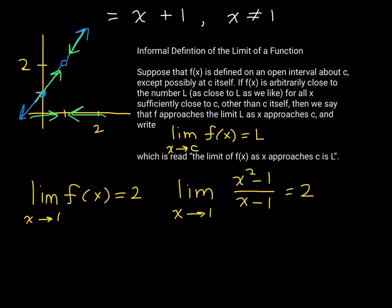I keep saying this is the informal definition, and it's because the phrasing 'arbitrarily close' — what does that really mean? How close are we talking? 'For all x sufficiently close to c' is really imprecise. In a further lesson, we will give a more precise, more robust definition for a limit. For now, this will do.